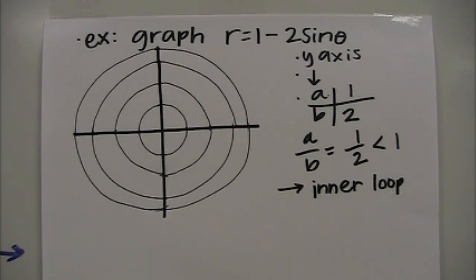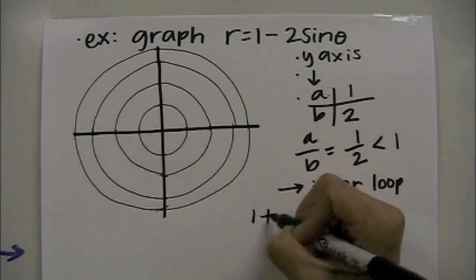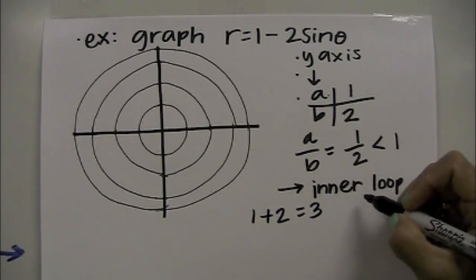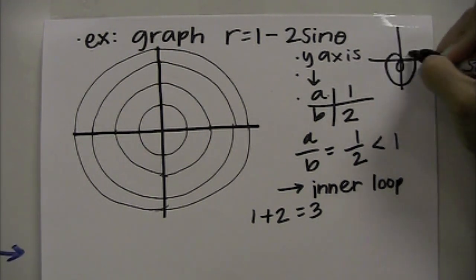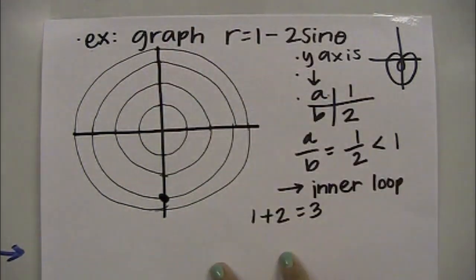Using our shortcut, we're going to take a plus b. So when we take a and we add b to it, we get a value of 3. So 3 is the height or how far it stretches on the main axis. Because I know my graph has an inner loop, and because it's a negative, I already know it's going to look something like that. So when I say a plus b equals 3, that's how far down it's going to go out: 1, 2, 3. So I know that one of the points is going to be here.